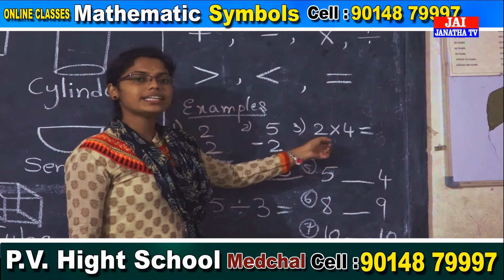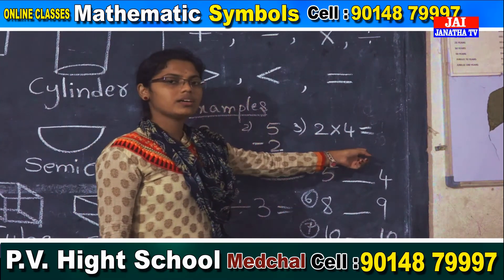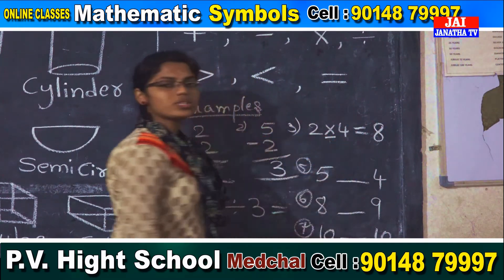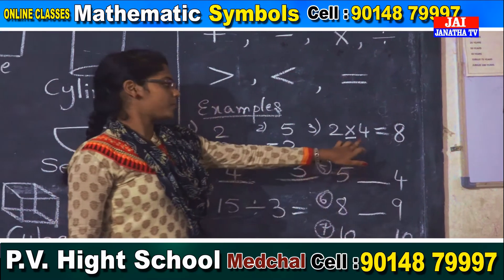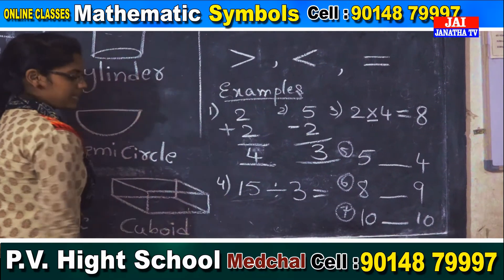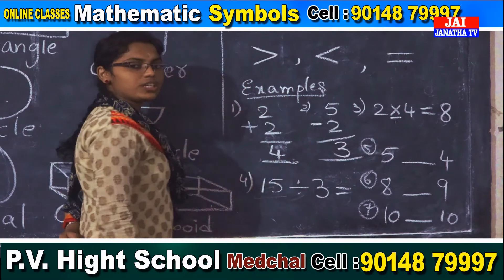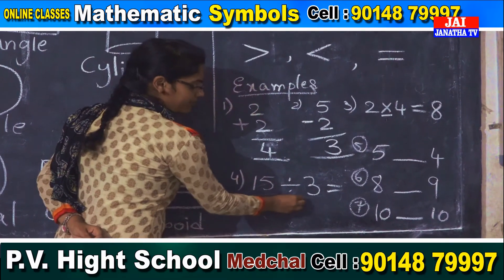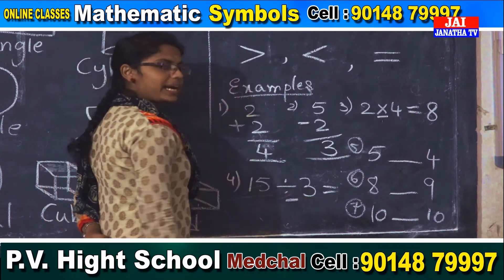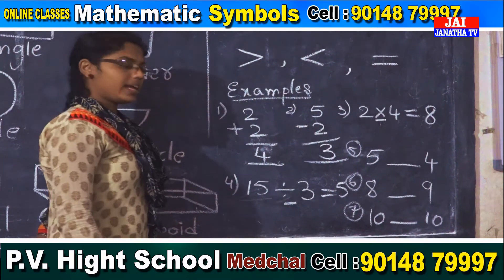The third example is related to multiplication. Here we used the into symbol. And the fourth example is related to division. Here we used the divided by symbol. 15 divided by 3 is 5.